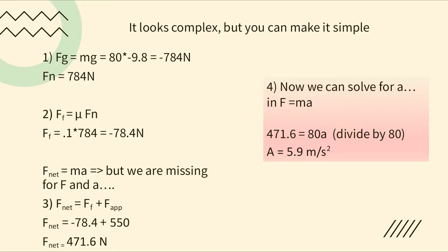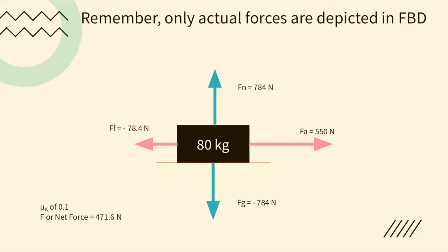Now we've found everything we need. Going back to F-net = ma, substituting values: 471.6 = 80 × a. To isolate a, divide both sides by 80, giving acceleration = 5.9 meters per second squared. It seems like a complex problem, but you just take it one step at a time.